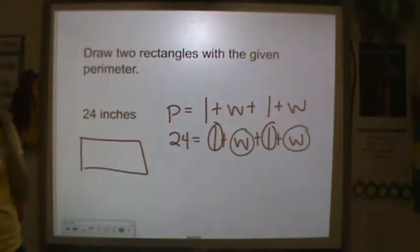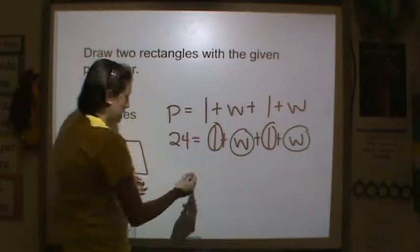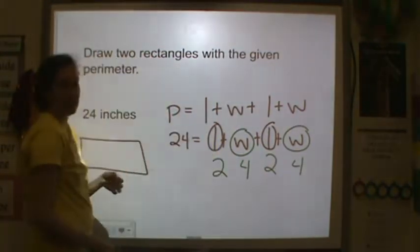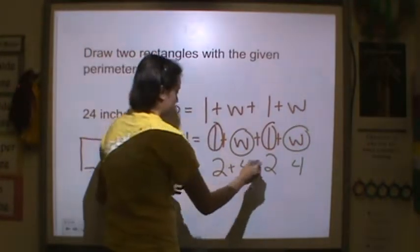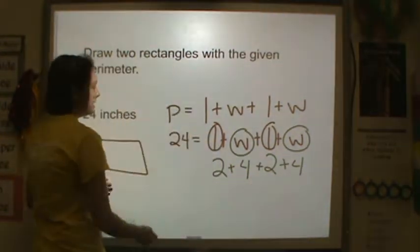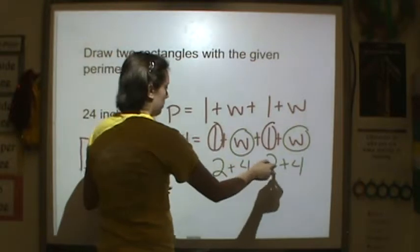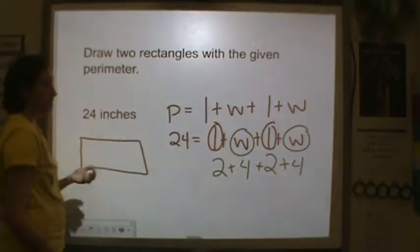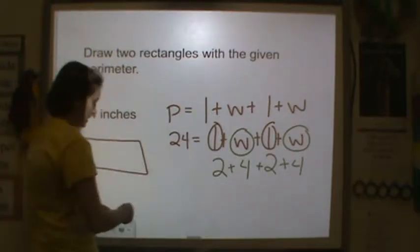Let's try 2 and 4. So let's do my length is 2 and my width is 4, because my lengths and widths have to be the same. So is 2 plus 4 plus 2 plus 4? 2 plus 4 is 6, 2 plus 4 is 6. Well, 6 and 6 is 12, so that doesn't work.